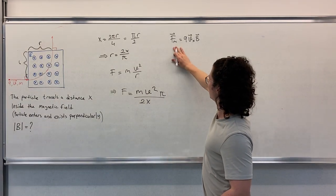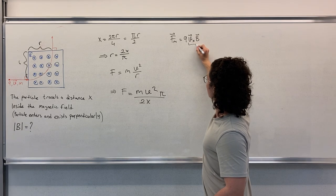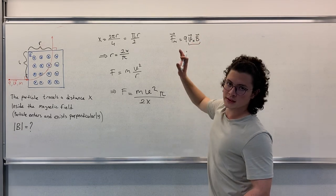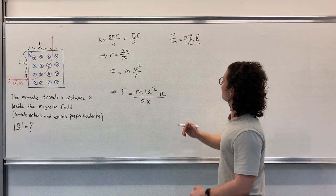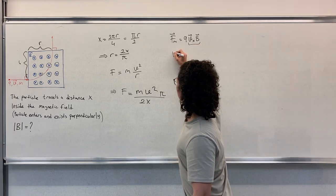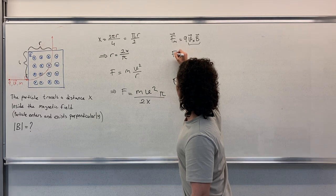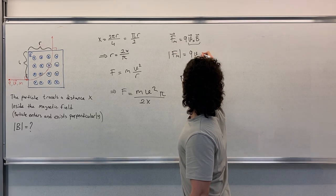To find this magnitude, we will look at this cross product. v and B are always perpendicular to each other, therefore we can write the magnitude of this force as qvB.